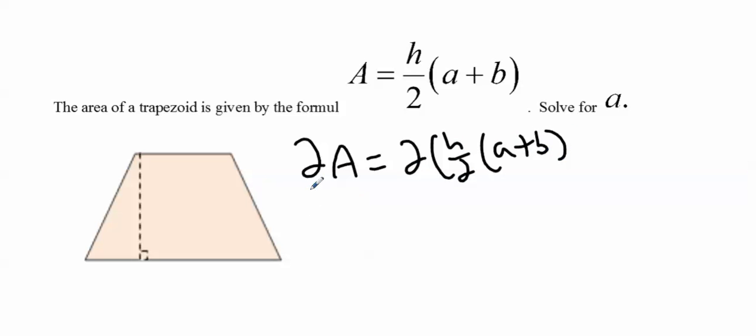So now I have 2A equals H times A plus B. Now there's a couple options you can do here. What I would do first is I'd actually say, well, H is being multiplied by A plus B. So what I'm going to do is I'm going to divide both sides by H.